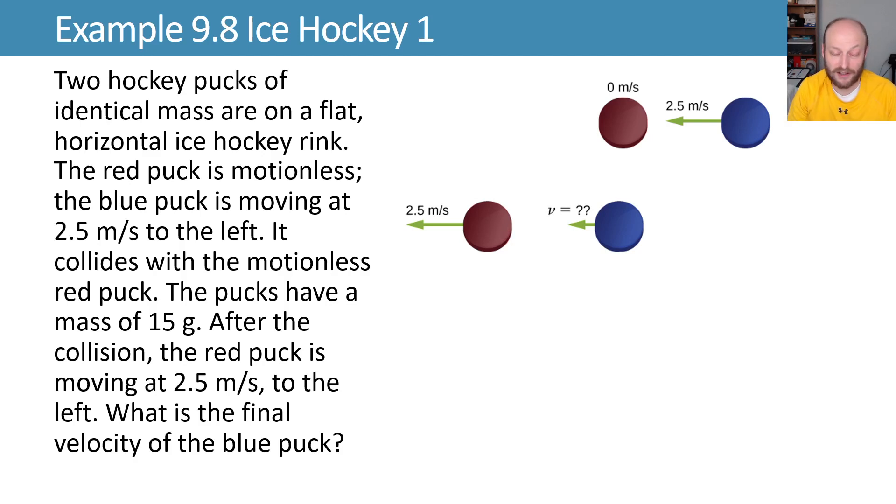What would it be studying collisions without using some hockey pucks? Here we have a hockey puck moving with some initial velocity of 2.5 meters per second that rams into a stationary hockey puck, after which the red hockey puck starts moving with 2.5 meters per second worth of velocity. We want to know what's the final velocity of our blue puck.